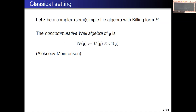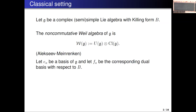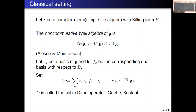This was introduced and studied by Alekseyev and Meinrenken. Let Ea be a basis of G, and Fa the corresponding dual basis with respect to our form B. Then this cubic Dirac operator is defined as some Ea tensor Fa plus gamma — an element of this non-commutative Weil algebra. This gamma is a special element of degree 3 in the Clifford algebra, so it lives only in the Clifford algebra.